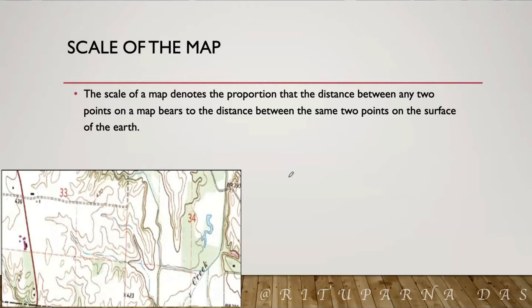For an example, in the topographical map, you have seen this is a road. Now, you want to know the length of the road. How will you know? You can take a ruler and you can measure the distance from here to here. For an example, after measuring, you have got 5 cm.